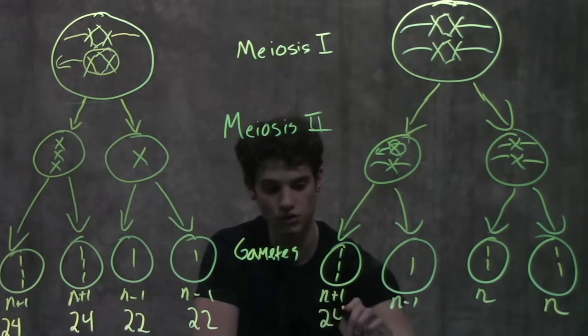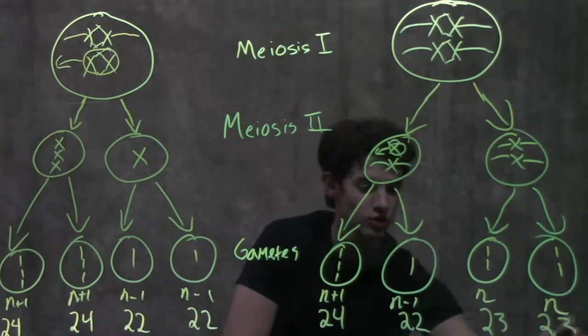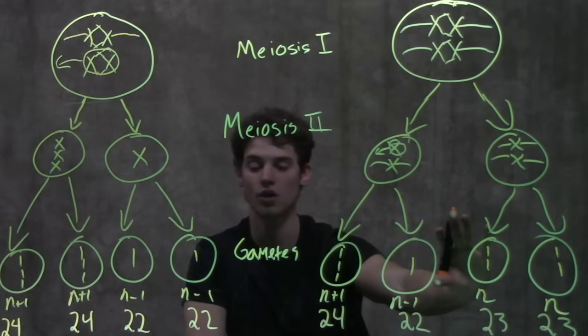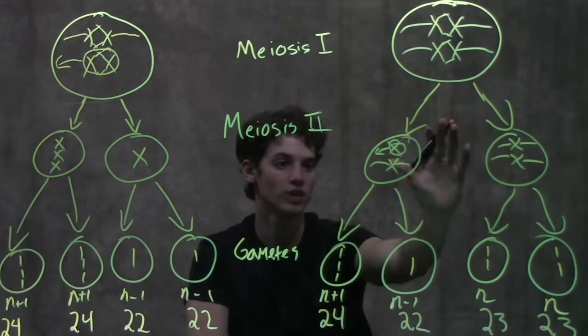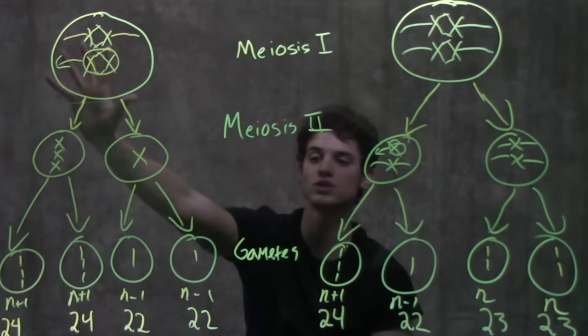So the difference between the two is that only half of these gametes are faulty because it only happened in half of the process, while during meiosis I, every single one is affected, resulting in total abnormality of gametes.